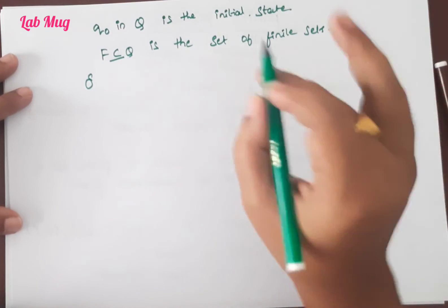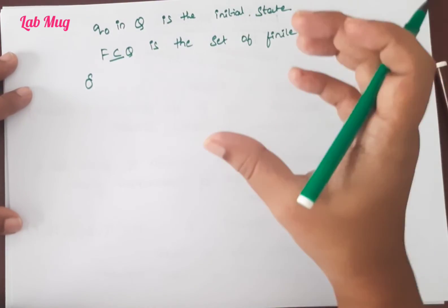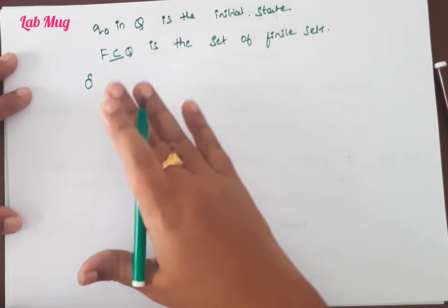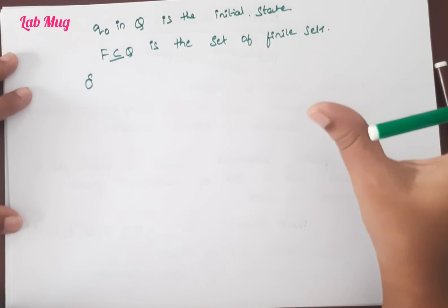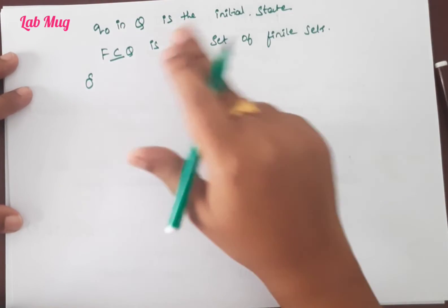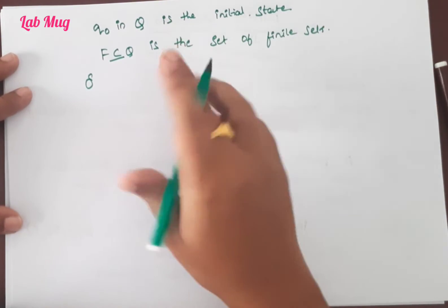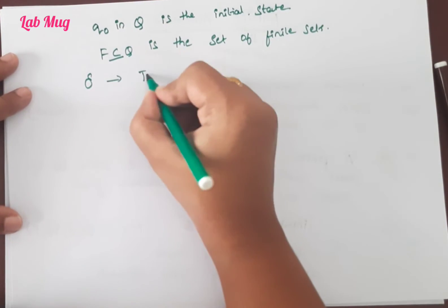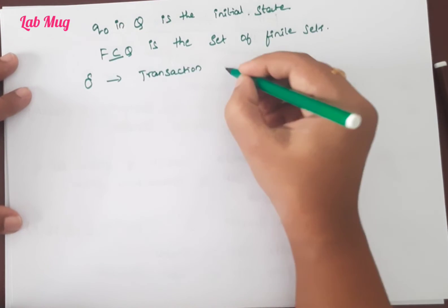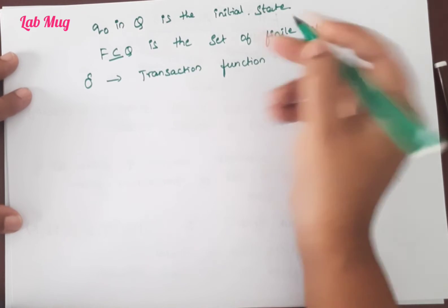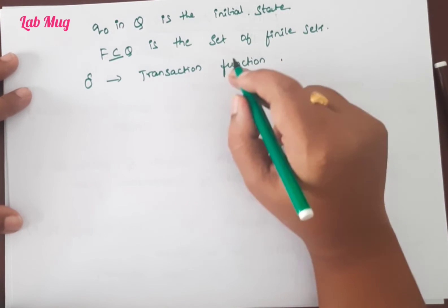Next, what is delta? It is very important because we already know what finite automata is - we took a collection of states and transitions between each state. So both are very important. F is important, Q is important. Here, delta is also very important because it is the transition. From one state to another state, the transition we make is represented as delta. That is represented like delta: transition function.